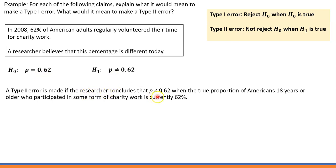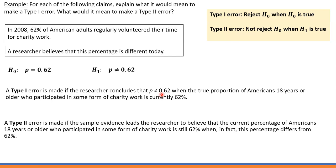In other words, the researcher concludes that the proportion is different today, when in reality the proportion of American adults who participated in some form of charity work is still 62%. A Type 2 error occurs when we do not reject the null hypothesis when in reality the alternative hypothesis is true — meaning the sample leads the researcher to believe the current percentage is still 62%, when in fact the percentage is different from 62%.